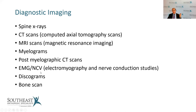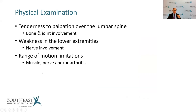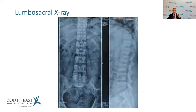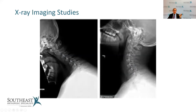Discograms or discography involves injections into the disc to determine pathology. With provocative discography, we increase pressure in the disc to see if it elicits the patient's characteristic pain, confirming discogenic pain. Bone scans are nuclear studies using very low radioactive substances — very good for finding specific tumors and occult fractures, including stress fractures that may not show up on x-ray, MRI, or CAT scan.